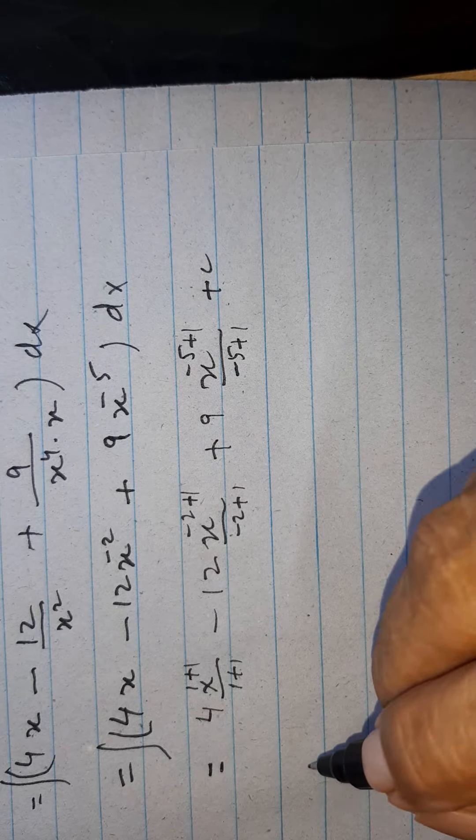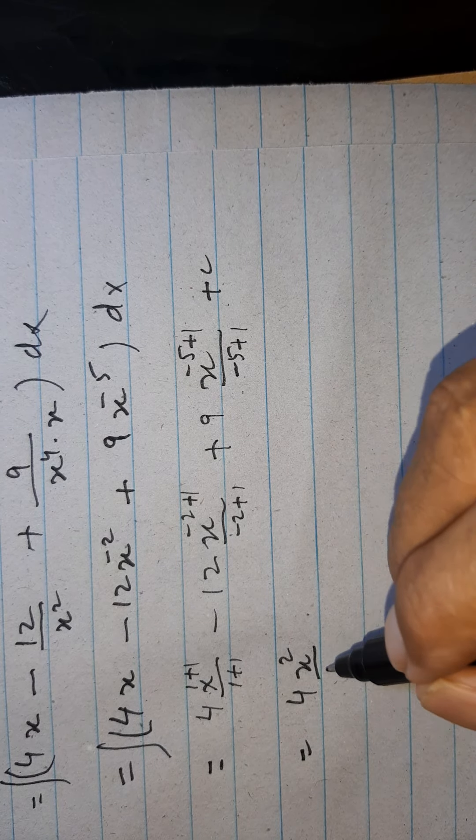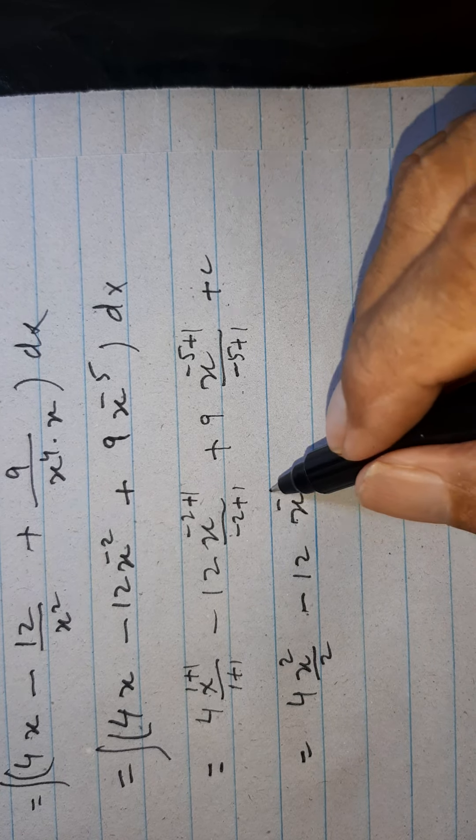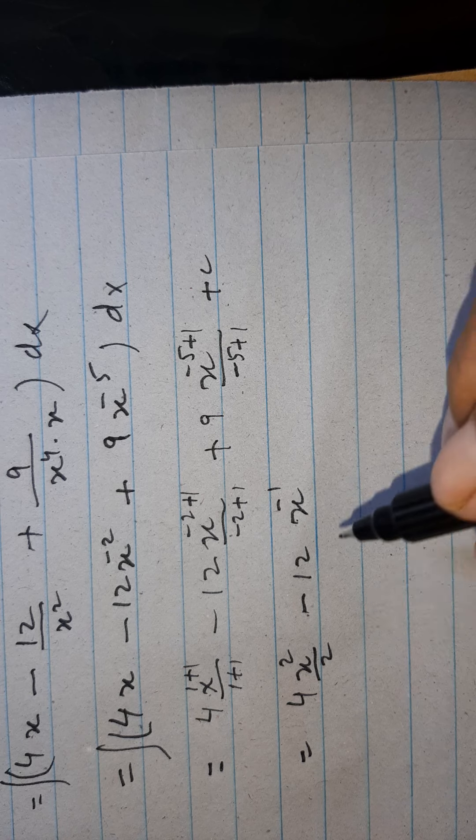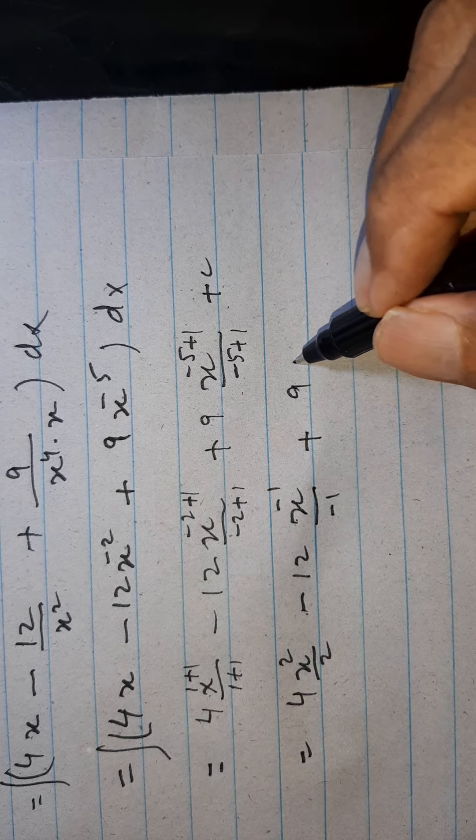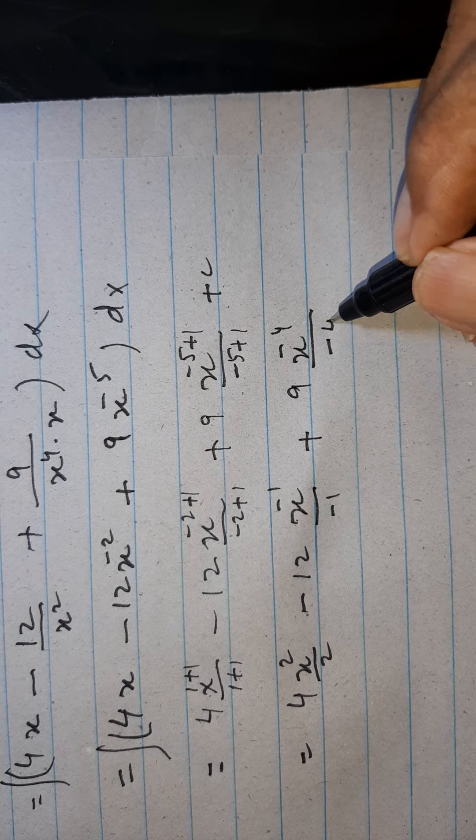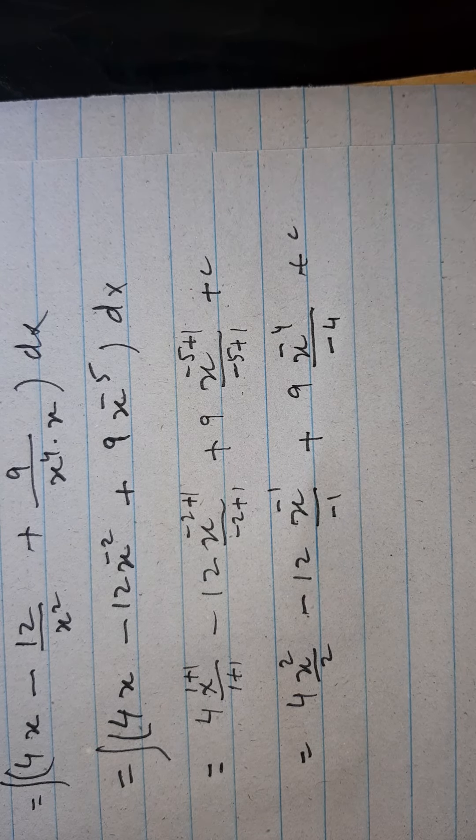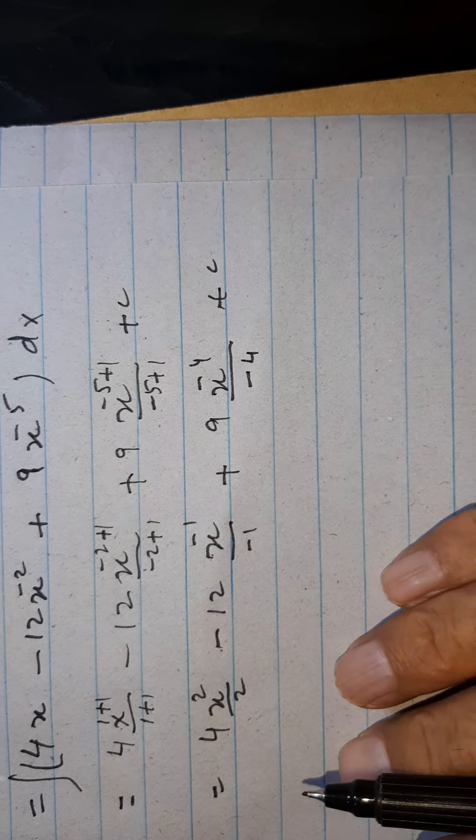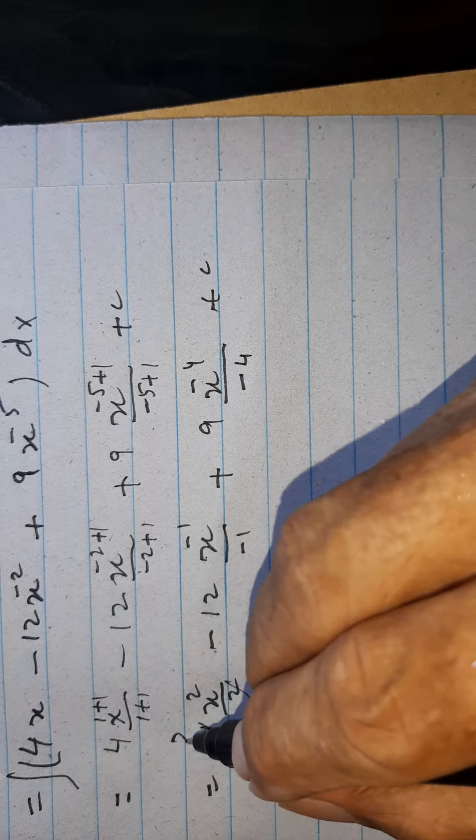And this will be 4 x square over 2, minus 12 x power minus 1 over minus 1, plus 9 x power minus 4 over minus 4, plus c. Then we can see this